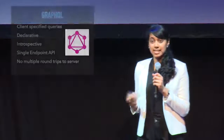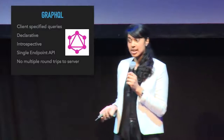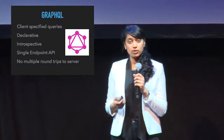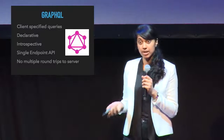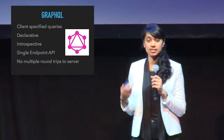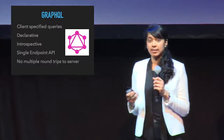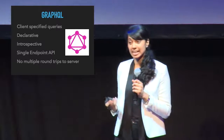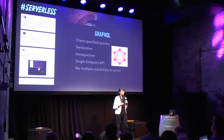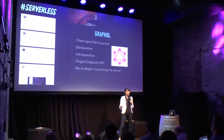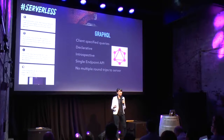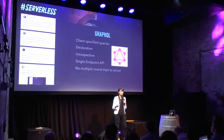GraphQL, for those of you who haven't heard of it before, is an application query language that was developed by Facebook, and it offers an alternative to a traditional REST API. There's a schema with a type system which you pre-define. The client can then request exactly the fields that it requires, and the server only sends back that data, all in a single trip to the server. So you can query multiple data sources through a single endpoint in a single trip.